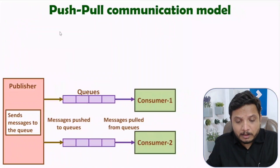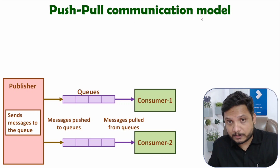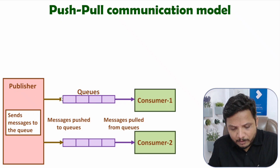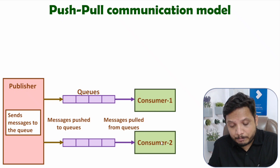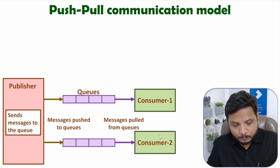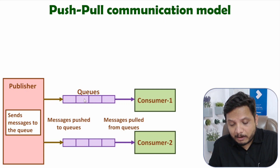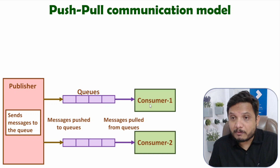Now the next communication model is the push-pull communication model. Here the publisher is sending messages into a queue. Messages are forwarded by the publisher into the queue, which acts as a buffer where messages are stored. The publisher pushes messages into the queue, and consumers can pull out messages based on their requirement — consumers retrieve messages based on need, not necessarily in sequence.